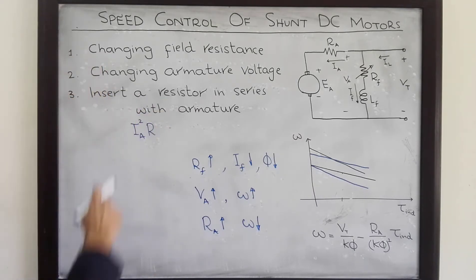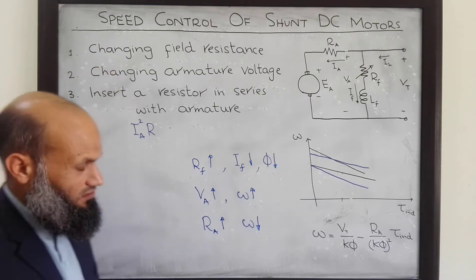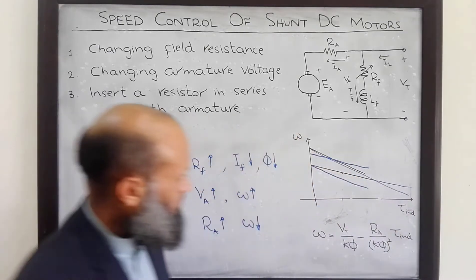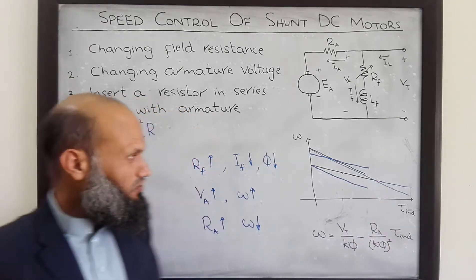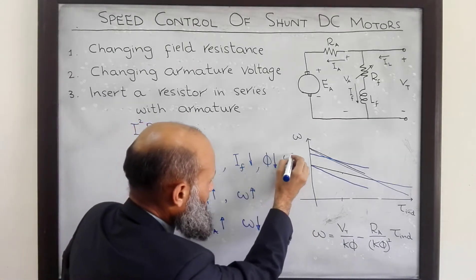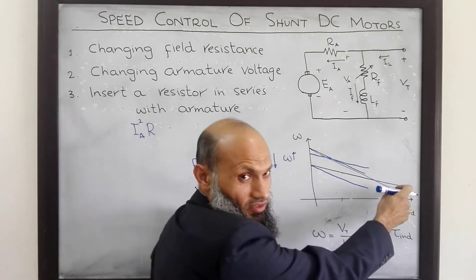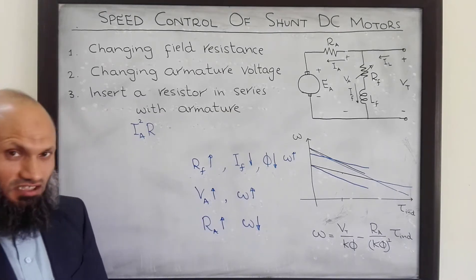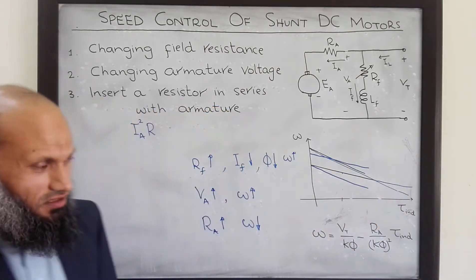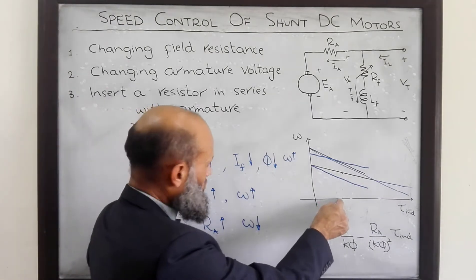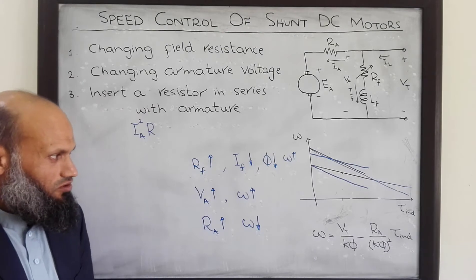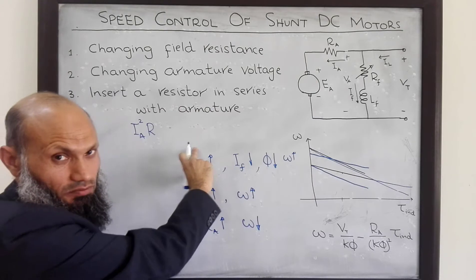Regarding the field resistance approach, if we extend the torque-speed lines, we are not quite sure what will happen with the speed as we increase RF. At smaller loads, an increase in RF is associated with an increase in speed. However, at heavier loads, an increase in RF is associated with a decrease in speed. Since the motor most often runs near the rated load, which is much less than the stall load, in most cases increasing RF will increase speed — but we must be sure about this behavior when using this approach.